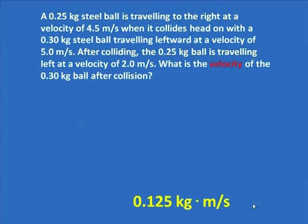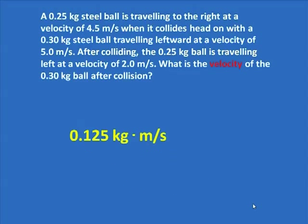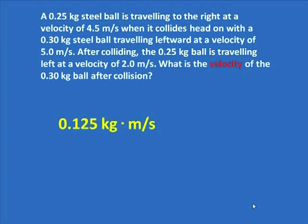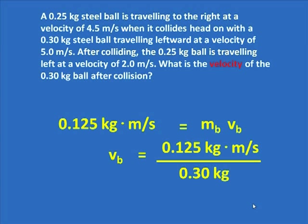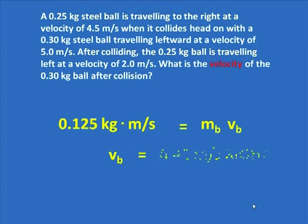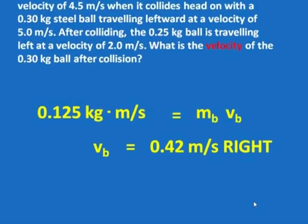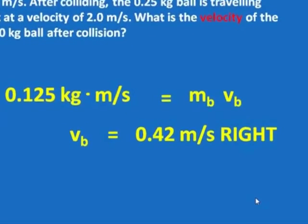We know the momentum of that ball, and we know it's positive to the right, and we set it equal to the formula for momentum for that ball, mass times velocity. And we solve for the velocity by saying the momentum of the ball divided by the mass of that ball, the kilograms cancel, and we find 0.42 meters per second to the right.